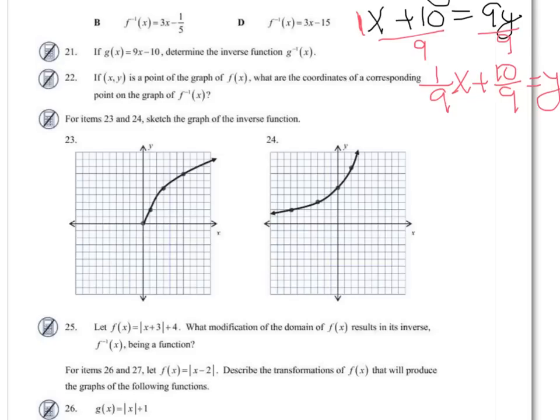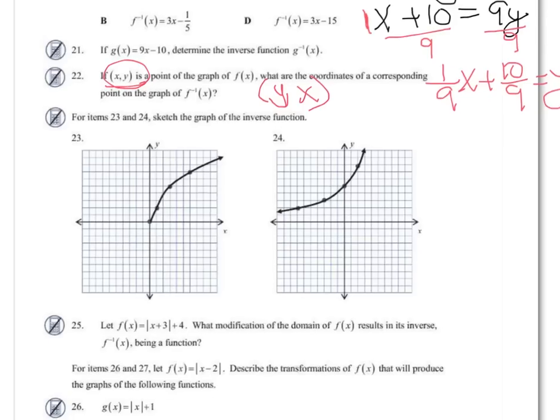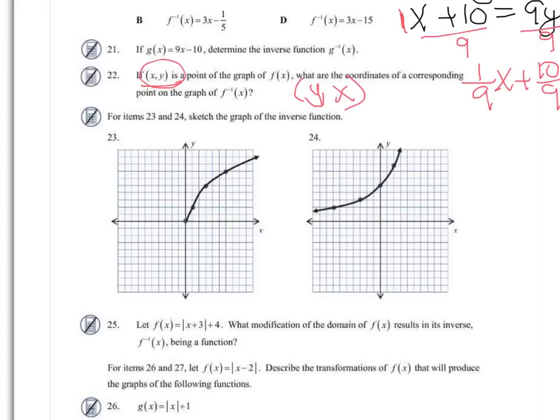And now for 22, when you have a point on the inverse, the y and the x is switched from your original. So we're going to use that to graph 23 and 24. I find it easier if you make a chart of values of your original. So then that way when I switch them, it's easier to switch them just by looking, if you just look at your table.